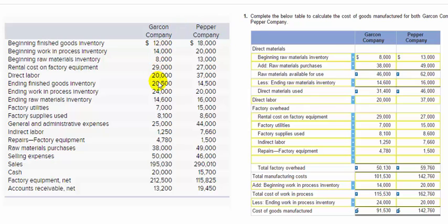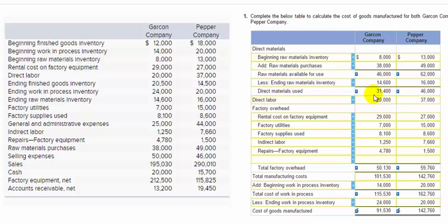Looking under the Gargon column, the beginning raw materials inventory is $8,000, which goes first. Then we add raw material purchases of $38,000. Adding those together gives raw materials available for use of $46,000. Then we subtract the ending raw materials inventory of $14,600, giving us direct materials used of $31,400.